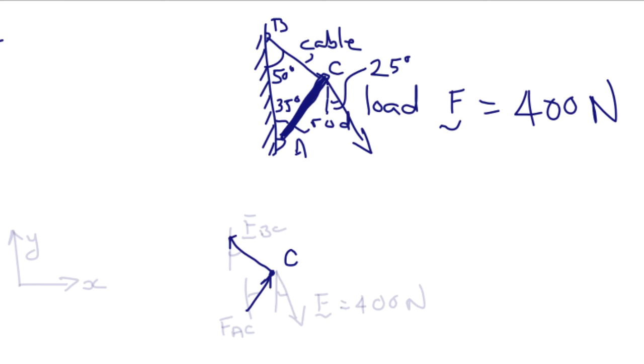So by making a cut in the cable, we expose a force here. And by making a cut in the rod, we expose a force here. We'll label the force in the cable FBC, the force in the rod FAC, and then the external load is F.